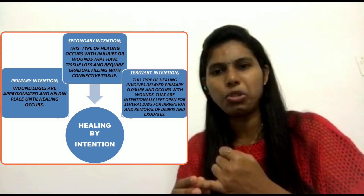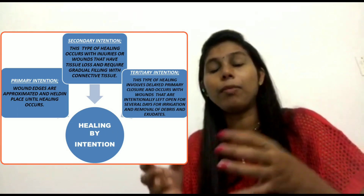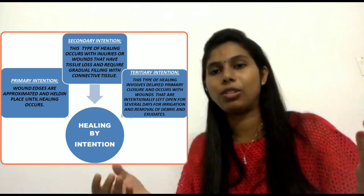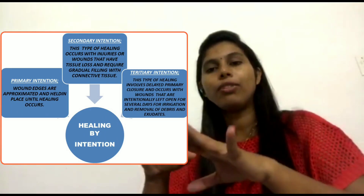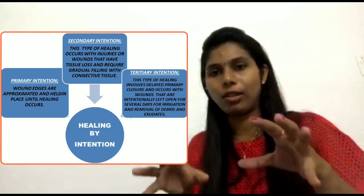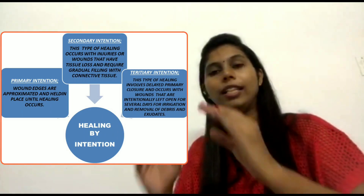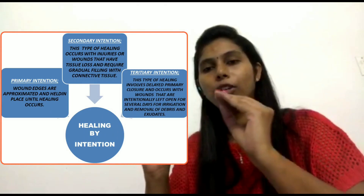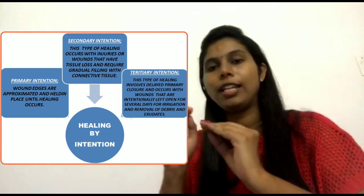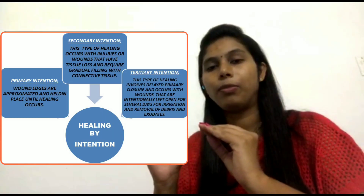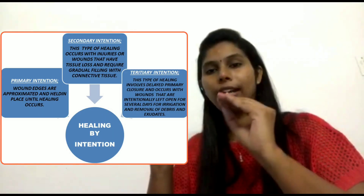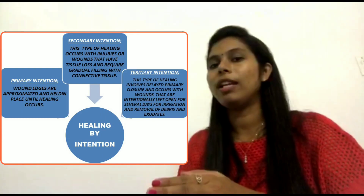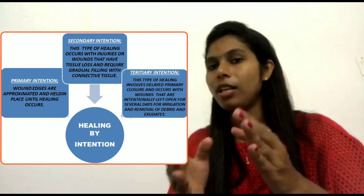For example, some diabetic wounds or some bedsore wounds may be very problematic with purulent drainage, exudates, and slough tissues. So first cleaning and irrigation are occurring. Then there will be slow growth of a clean wound bud, which helps the development and filling of connective tissue. After that filling process, we complete the Tertiary Intention.